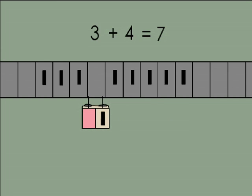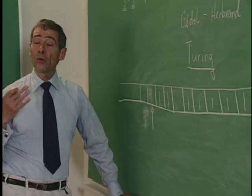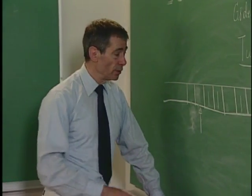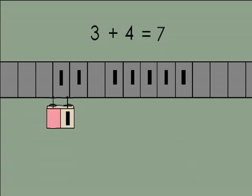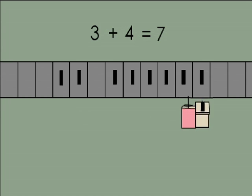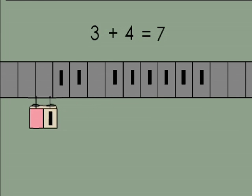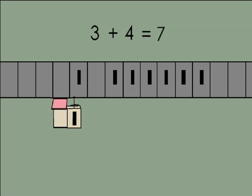Move left again to the next blank space. Then move right and erase. And now we repeat that whole procedure: move right one space. Is there a 1 there? Yes. If so, move right to the first blank space, move right to the second blank space, and copy that 1. Back to the first blank space, back to the second blank space, and stop. Then it moves right one space and erases.